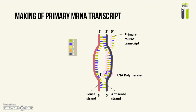The poly-A tail is involved in stabilizing the mRNA molecule so that it doesn't degrade when it reaches the cytoplasm. RNA polymerase 2 will often continue to transcribe DNA for several thousand more bases, but all of the mRNA bases attached after the poly-A tail will be eventually lost because those bases are not stabilized.